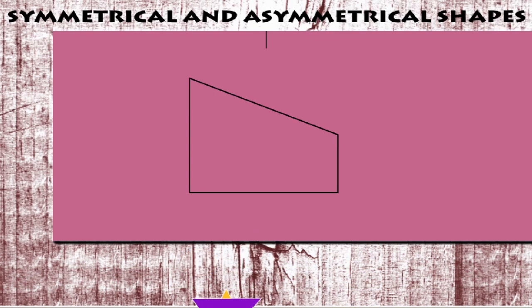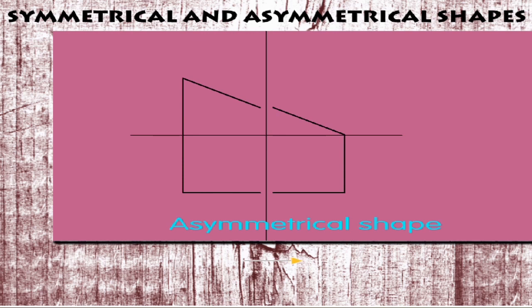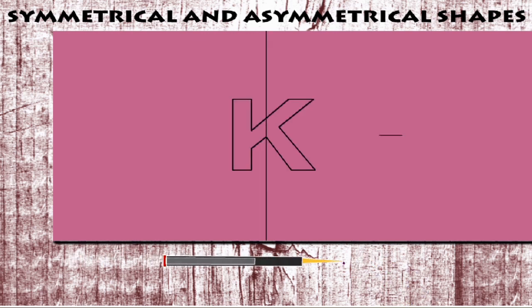Here is the outline of a factory building. This is asymmetrical because it cannot be divided into mirror duplicates. Thus, letter K and letter J both are asymmetrical.